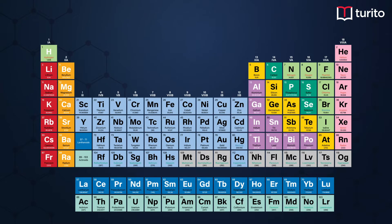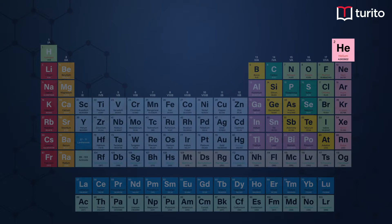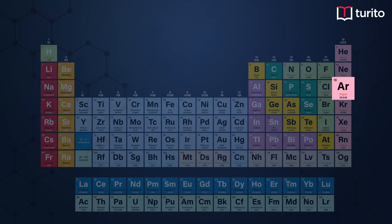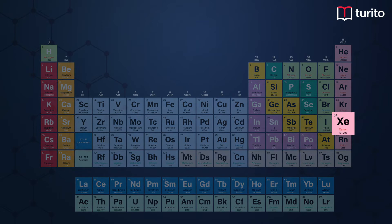Now let us see what are the noble gases and what are their respective atomic numbers. The first noble gas is helium, whose atomic number is 2. Next is neon, whose atomic number is 10. Next, argon 18, krypton 36, xenon 54, and radon 86.